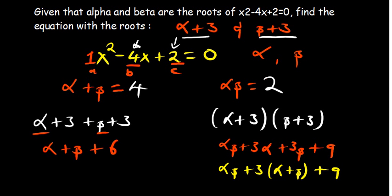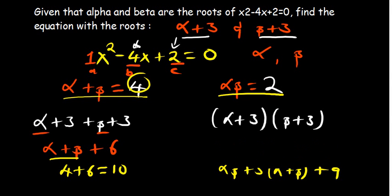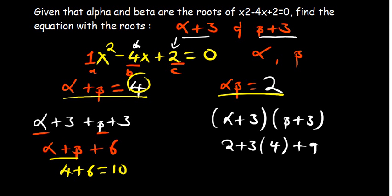The equation we were given helped us get the value of alpha plus beta and the product alpha beta. We can quickly substitute. Where we have addition, the answer is 4, so 4 plus 6 gives us 10. On the other side, alpha beta is 2, so we have 2 plus 3 times 4 plus 9. That's 2 plus 12 plus 9, which gives us 23.